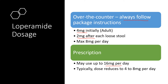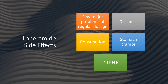On prescription, it can be used up to 16 milligrams per day. However, the dose is generally reduced as you're on it to help control symptoms, usually down to four to eight milligrams per day. It will of course depend on the cause and whether it's controlling symptoms properly, and your healthcare provider can determine the appropriate dose for you.